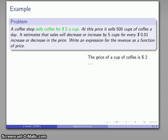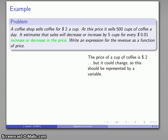A good starting point for trying to find any function is to identify what changes and what stays the same. Here we're told that the price of a cup of coffee is $2 but this could change. It's implied in this statement that we could increase or decrease the price, so we ought to let that represent a variable x.